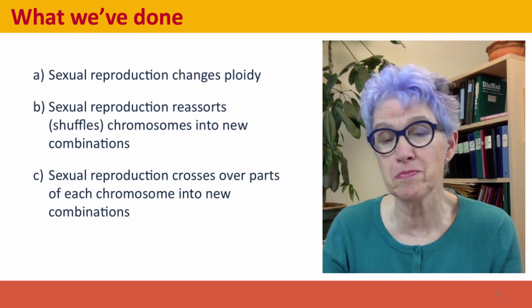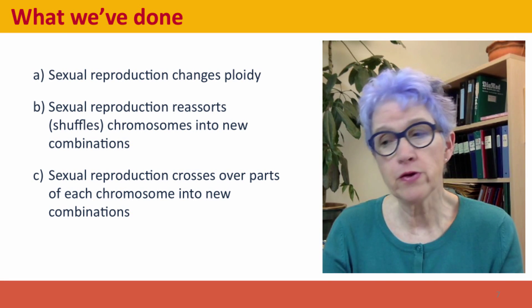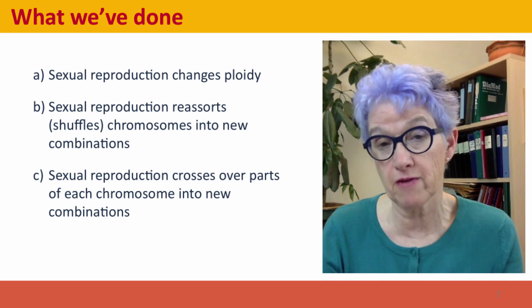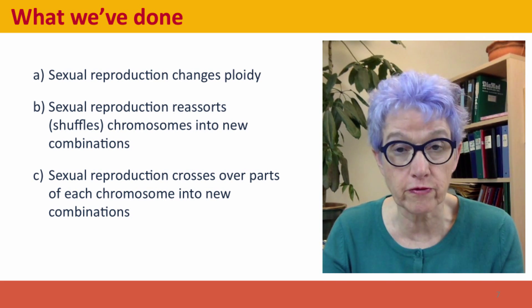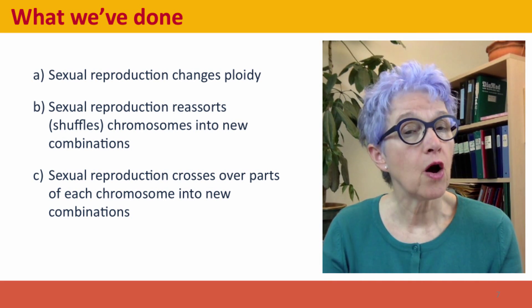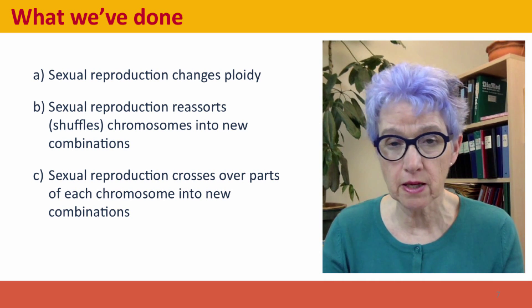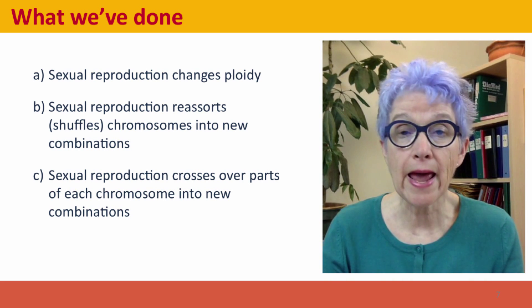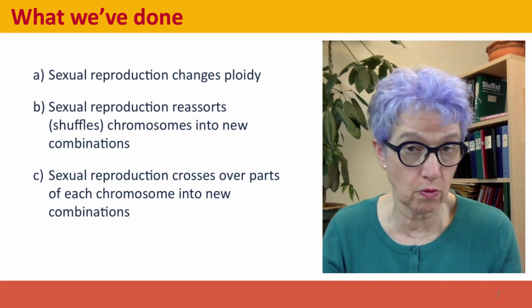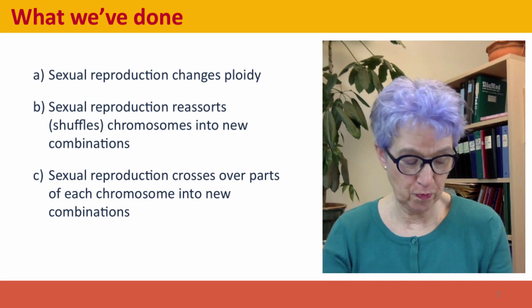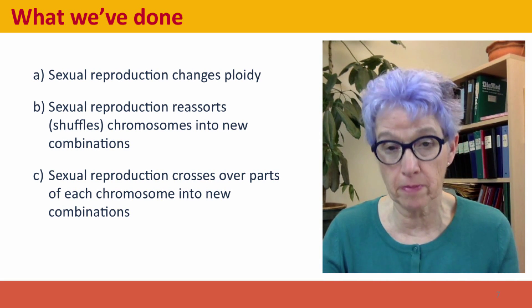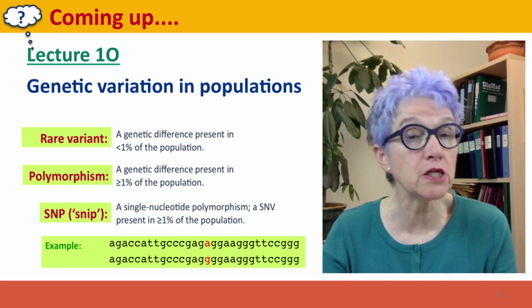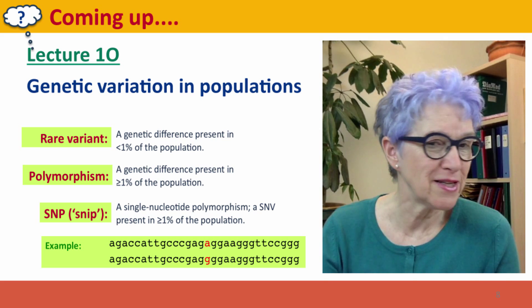We'll be discussing this in much more detail later in the course. For now, you simply need to understand that sexual reproduction changes the number of sets of chromosomes — the ploidy of our cells — so that gametes have a single set and body tissues have two sets. We generate a lot of genetic variation just by shuffling existing variation into new combinations, both by reassorting chromosomes and by crossing over between parental chromosomes. That's all you need to understand; the mechanisms can wait. Coming up next, we're ready to think about genetic variation in populations, which will bring us back to the question of how different we are and whether we really did have sex with Neanderthals.